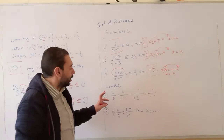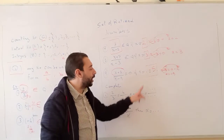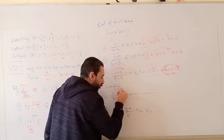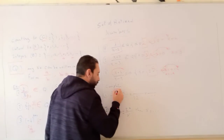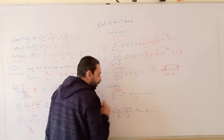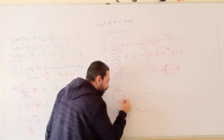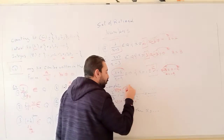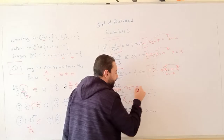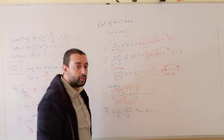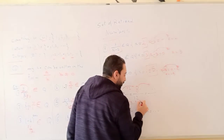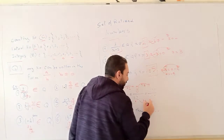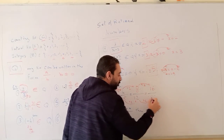Complete the equivalent fractions: 2 over 3 equals 4 over how much? Equals how much over 12? These are called equivalent fractions. The numerator went from 2 to 4, so we multiplied by 2. Then 3 times 2 equals 6. For the next part, 6 becomes 12 by multiplying by 2, so 4 times 2 equals 8. We can multiply both numerator and denominator by the same number. For example, multiplying by 2 gives 8 times 2 equals 16, and 12 times 2 equals 24.